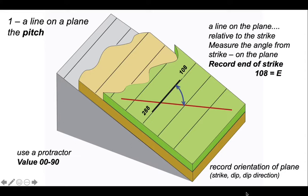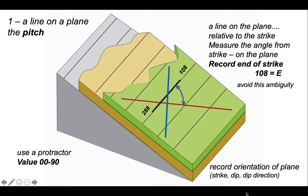It's important to record which end of the strike symbol you've made the measurement from. If the strike has a value of 288/108 and we've measured from the 108 end, that must be noted because there's an ambiguity: a similar pitch measured from the opposite direction would give a different result. A blue line measured from the 288 end would have a pitch of 45 degrees west, but we're interested in the red line — its value is measured from the east end.